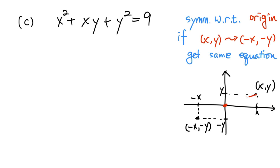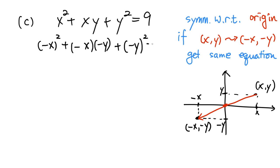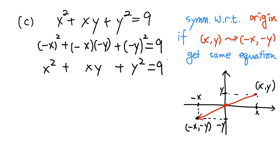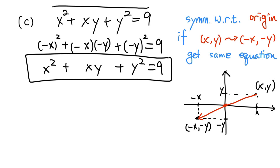Let's check this equation for symmetry with respect to the origin by substituting x with negative x and y with negative y. We get: (-x)² plus (-x)(-y) plus (-y)² equals 9. Since (-x)² = x², (-x)(-y) = xy, and (-y)² = y², we have exactly the same equation as the original. So the graph is symmetric with respect to the origin.